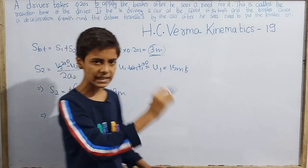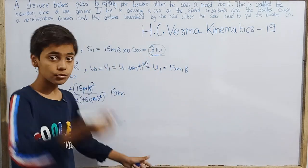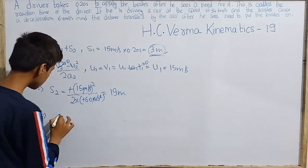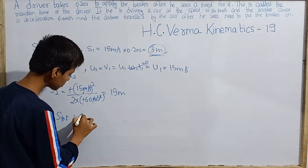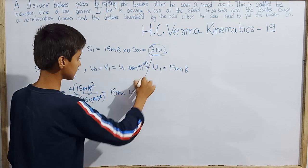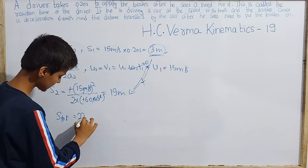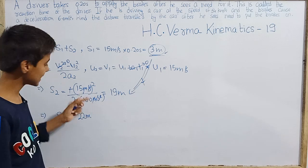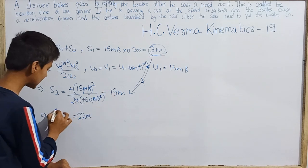So when the car finally comes to rest, it traveled approximately 19 meters after the brakes were applied. Before braking, during the reaction time, it traveled 3 meters. The total distance traveled is 19 + 3 = 22 meters. This is an approximate value, as 225/12 is close to 19 meters.